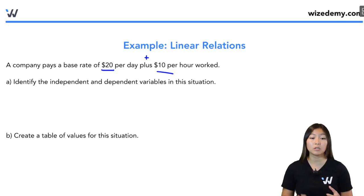You're given a word description, you're asked to do certain things with it, come up with the table of values, the equation, the graph, and that's what we're going to see in this example. In part A, we want to first identify the independent and the dependent variables in this situation.